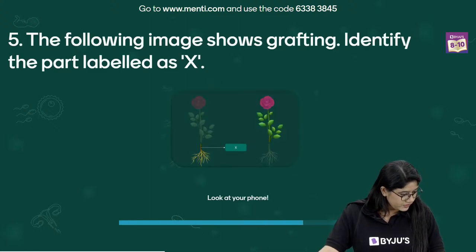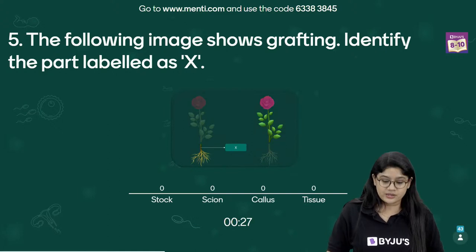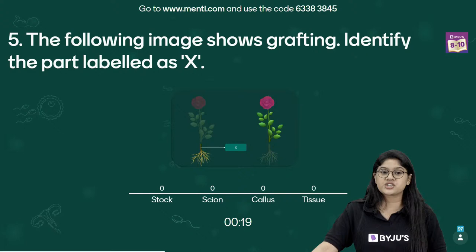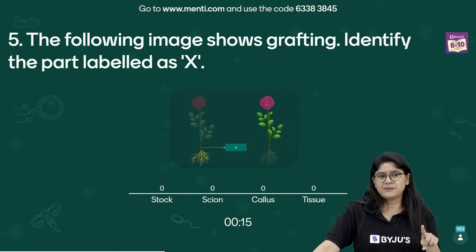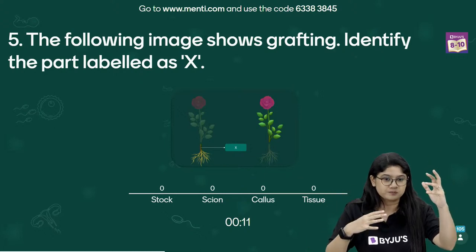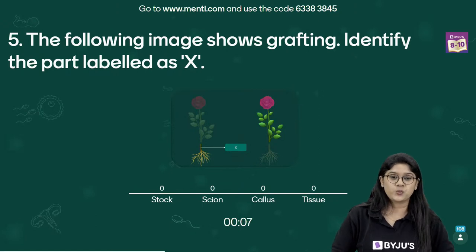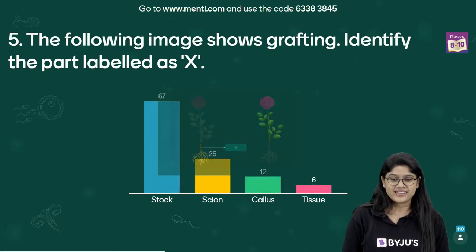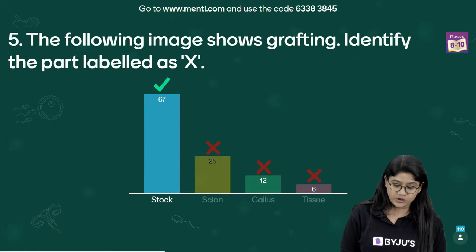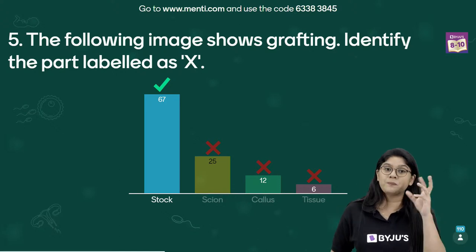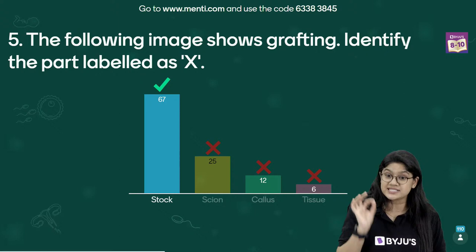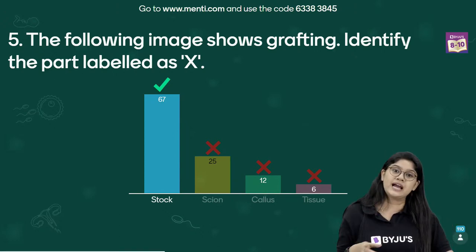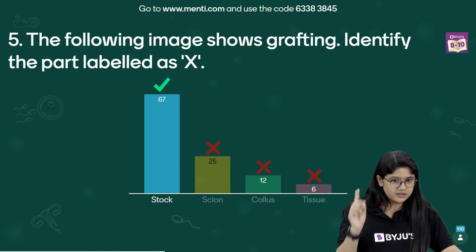Question number five shows an image of grafting. We need to identify the part labeled X. In grafting there's an upper part and a lower part — what is X? 67% voted correctly: the answer is stock. The lower part in grafting is called the stock, and the upper part is called the scion. If you got it wrong, make a note of the correct answer.